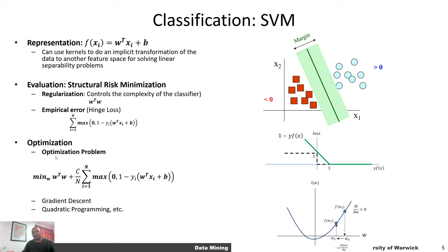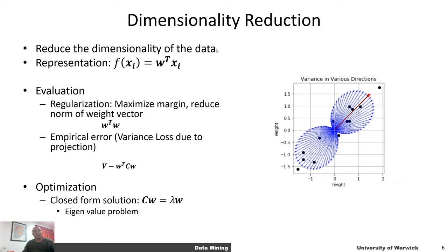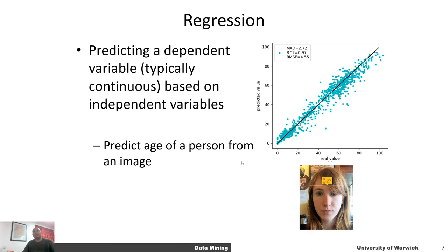We've also talked about dimensionality reduction in terms of principal component analysis. The representation is similar: we want to find a vector w such that if we project all of our data xi onto that vector, the variance along that direction is maximized — or equivalently, the loss in total variance is minimized. Similarly, we've talked about regression problems, where for example given an image of a person we want to predict their age. Prediction of real numbers from any type of independent variables is called regression.